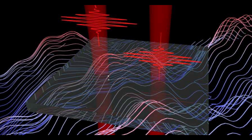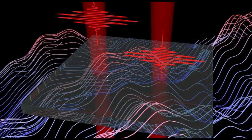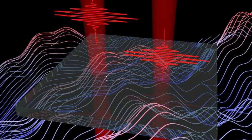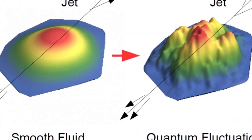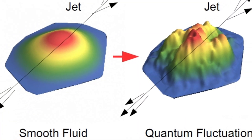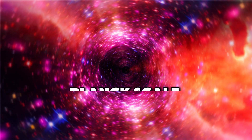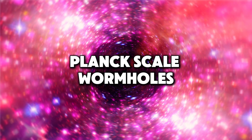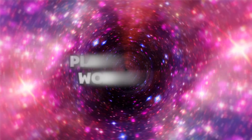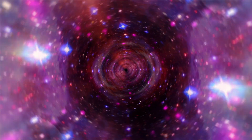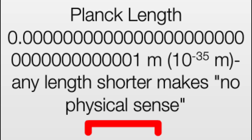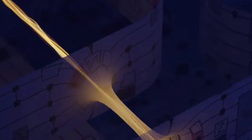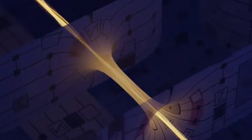These wormholes contribute to the understanding of vacuum fluctuations and the topology of spacetime at the quantum level. Planck-scale wormholes are hypothetical wormholes that exist at the Planck length — the smallest scale in the universe.